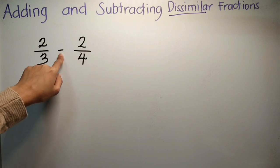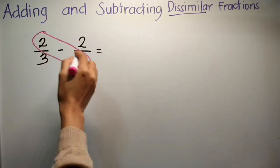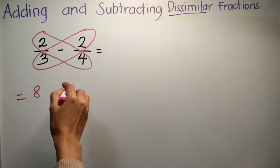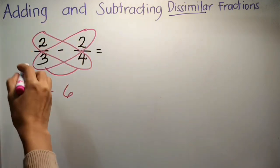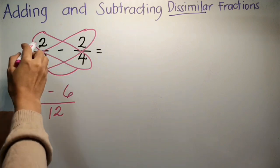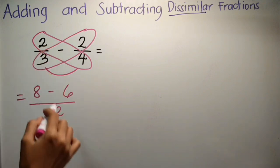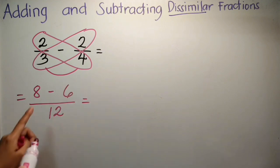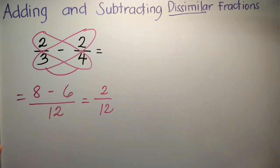Kids, ganun din yung process mapa-addition man yan o mapa-subtraction. Step 1, multiply: 2 times 4 ay 8, and then multiply mo rin ito sa kabila — 3 times 2 ay 6. And then you copy the operation, tsaka mag-multiply ng kanyang dalawang denominator — 3 times 4 is 12. So ang sagot: 8 minus 6 ay 2, i-copy mo ang denominator. So 2/12.